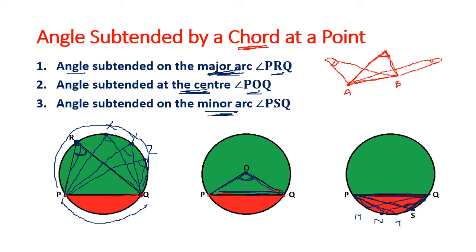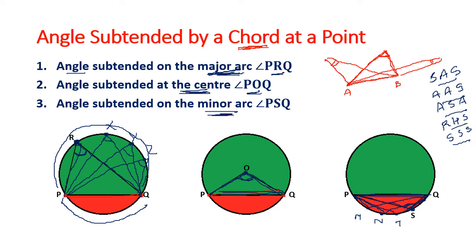Now we are going to do certain theorems — very easy theorems. For these theorems we have to be well aware of the chapter on congruency. We are going to merge the chapter on congruency of triangles with circles. The five congruency theorems we have are: SAS, AAS, ASA, RHS, and SSS. If you know congruency well enough, this will be very easy.